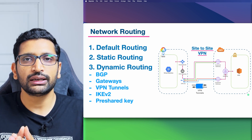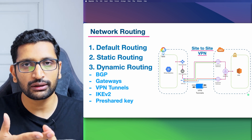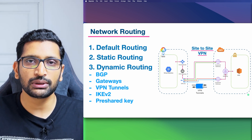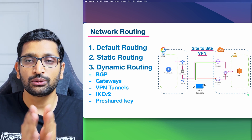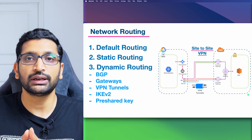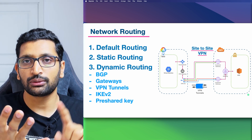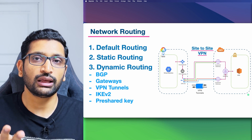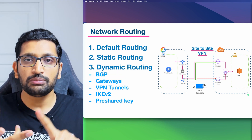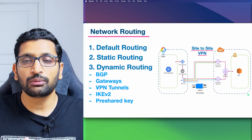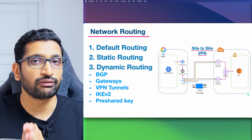I have divided this whole video into two parts. In the first part we will be talking about default and static routing with real-time examples. The second part is more complex because it requires two clouds — that's where we will be setting up dynamic routing using Google Cloud and AWS, setting up BGP, gateways, VPN tunnels, pre-shared keys, and how to make those VPN tunnels highly available.